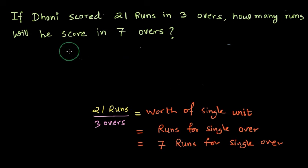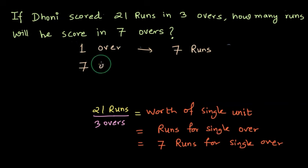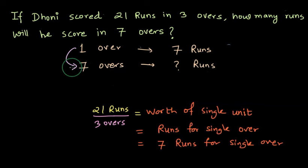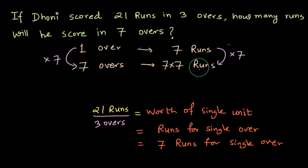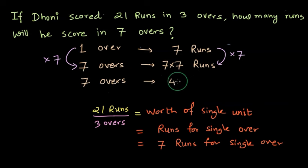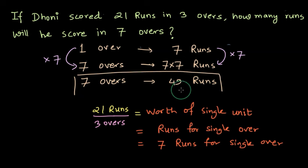We need to find out how many runs Dhoni will score in 7 overs. Since 1 over gives 7 runs, for 7 overs we multiply the runs scored in 1 over by 7. So we multiply 7 by 7, and Dhoni can score 49 runs in 7 overs. That is our answer.